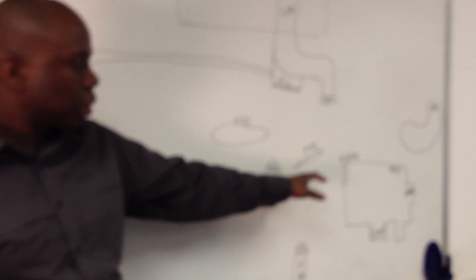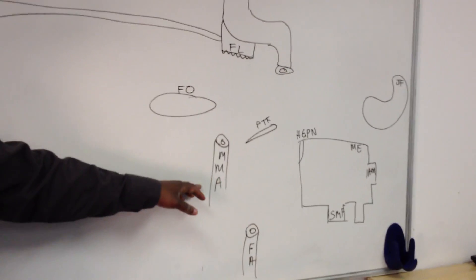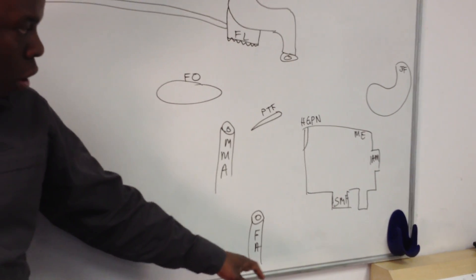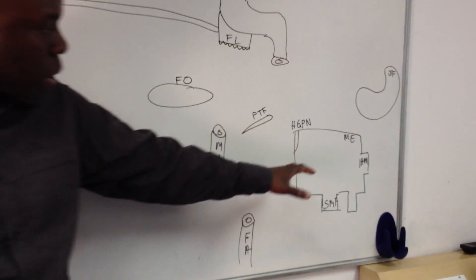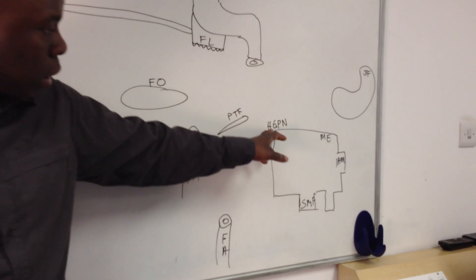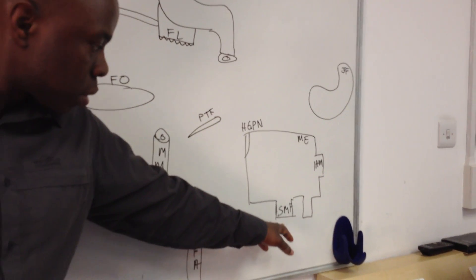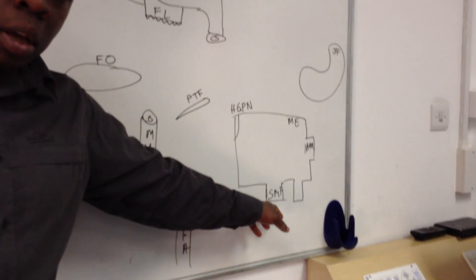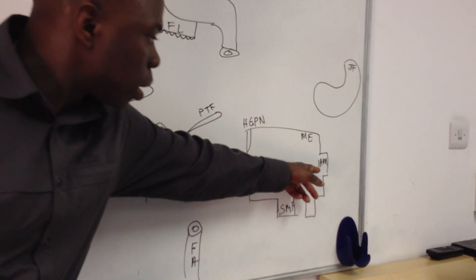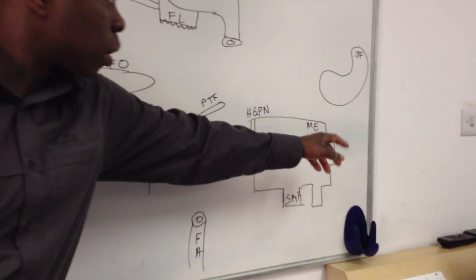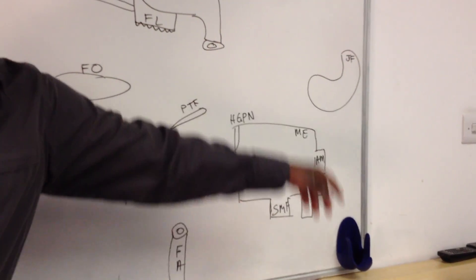So, other structures: foramen ovale, petrotympanic fissure, middle meningeal artery, facial artery, and the middle ear with the hiatus for the greater petrosal nerve, stylomastoid foramen, internal acoustic meatus, and the jugular foramen.